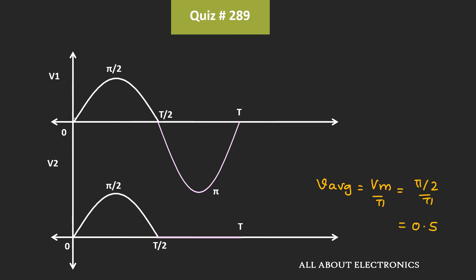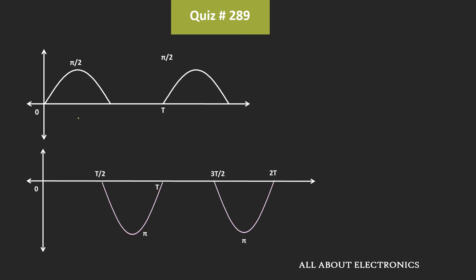To easily find the average value, we can divide the waveform V1 into two parts. This waveform V1 is the summation of these two waveforms, and both waveforms are similar to the half wave rectifier waveform. For the first waveform, the average value V1 will be equal to Vm divided by π, that is (Vm/2) divided by π, which equals 1/2.